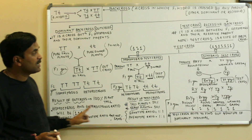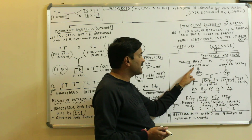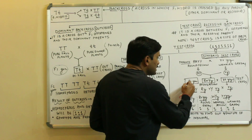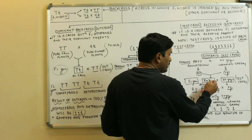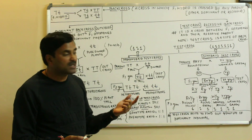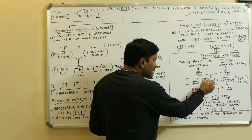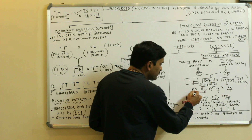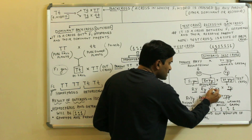Now for the dihybrid test cross, two contrasting characters are taken — round yellow and wrinkled green as parents. Crossing the parents gives the F1 generation: capital R small r capital Y small y, which is round yellow because capital R is dominant over small r and capital Y is dominant over small y. This F1 generation is then crossed with the recessive parent (small r small r small y small y) for the test cross. The gametes from F1 are: capital R capital Y, capital R small y, small r capital Y, and small r small y.